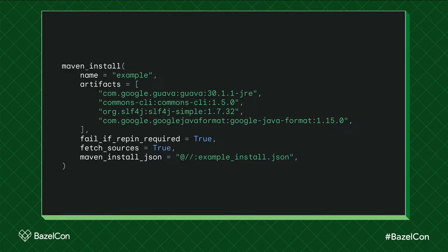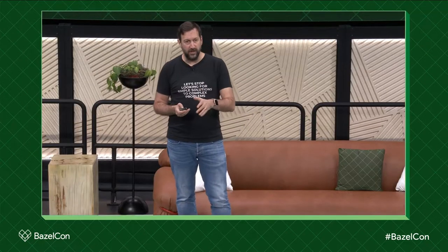This is what it looks like at the moment. If you've ever used Java on a Bazel project, you probably have something like this: maven_install in your WORKSPACE file. The name is defaulted to maven because this is a macro, and you can see we depend on some artifacts: Guava, Commons CLI, SLF4J Simple, and Google Java Format. We have a lock file called maven_install.json, and we handle the common error case of someone updating the WORKSPACE without repinning by setting fail_if_repin_required to true. I really recommend just setting that flag — it'll save you so much pain when debugging. We also fetch sources, because when working in an IDE it's nice to delve into library internals.